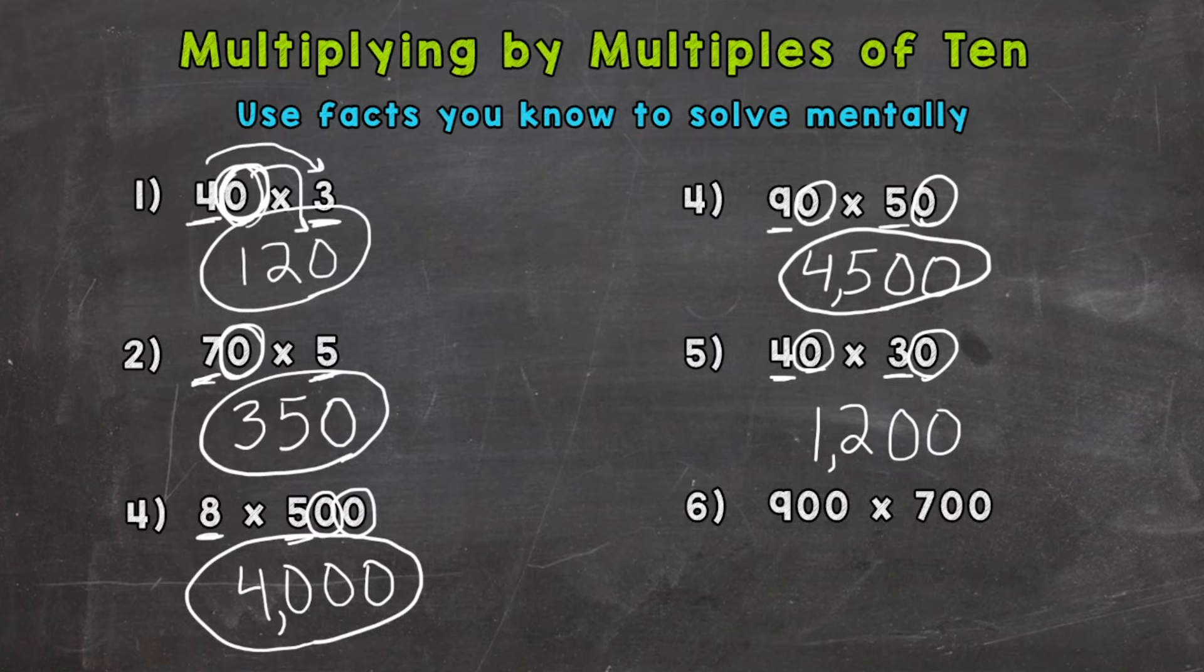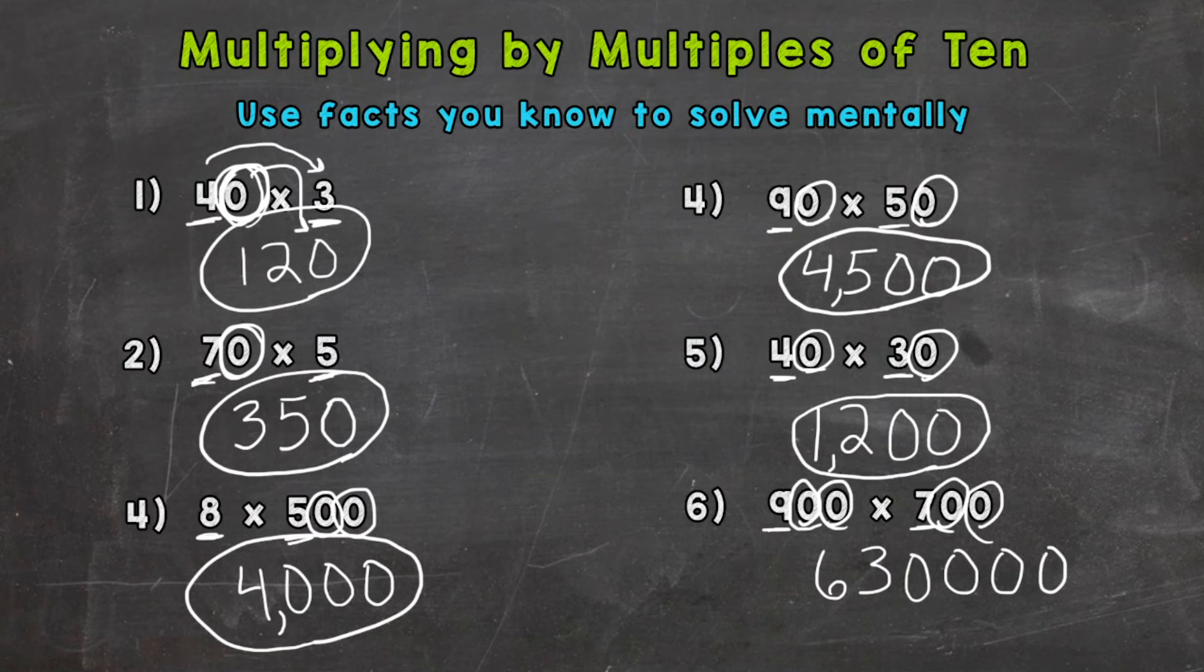Number 6, we have 900 times 700. So the fact we can pick out is 9 times 7, which is 63. Let's take a look at our original problem here, and we have 1, 2, 3, 4 zeros. So 1, 2, 3, 4 zeros, put in the comma: 630,000.